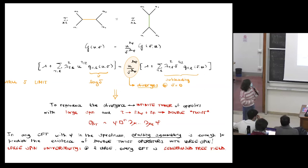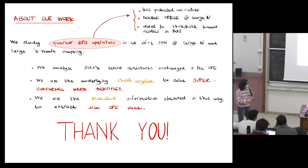So in words, in any CFT with a finite spectrum—which means that we can have an identity here—crossing symmetry is enough to predict the existence of double twist operators, which have this form. But these are the same operators that you can find just by studying generalized free fields. So at large spin, every CFT is a generalized free field.